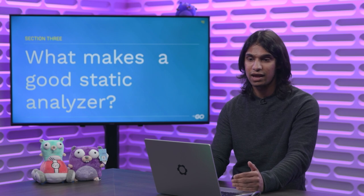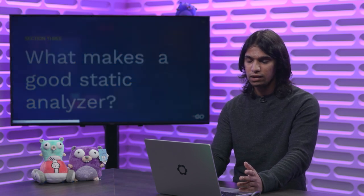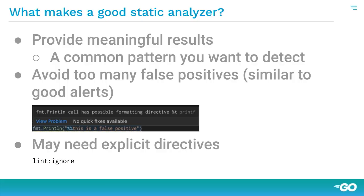So let's talk about what makes a good static analysis tool. A good static analysis tool will provide meaningful results to the user — meaningful meaning you're getting an error that is actually real, so it's not a false positive. The issue occurs commonly enough that it's not just a one-time thing. It hopefully catches something you probably don't want to see later on — probably some big issue. A lot of these good qualities also apply to alerts, so there's a nice correlation there.